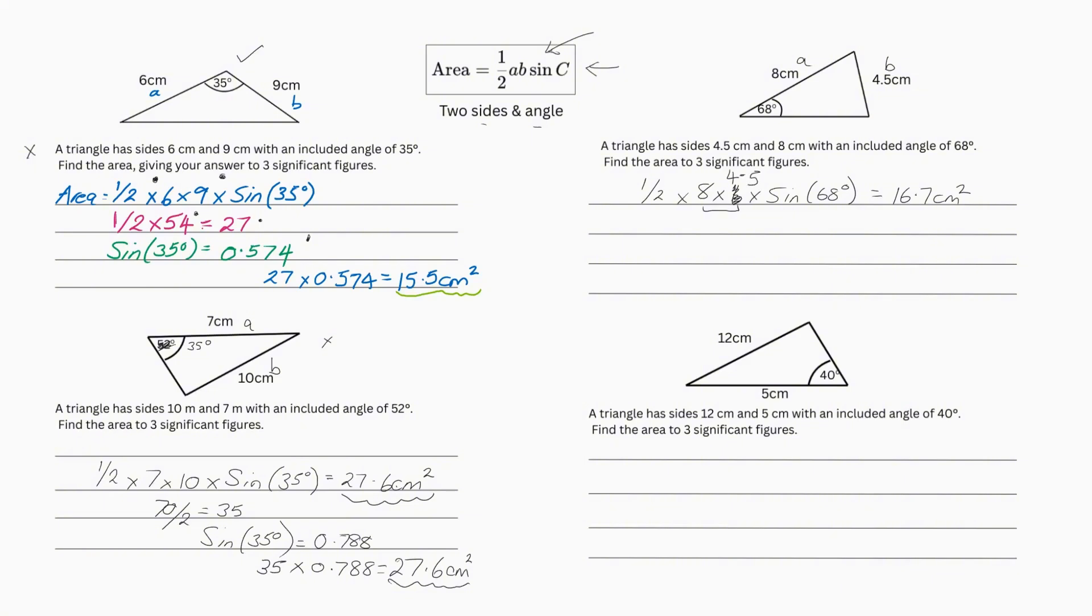Whoops. So 8 by 4.5. So that's going to be 36. Half 36 is 18. And then we have sin 68 degrees. Remember to close the bracket on your calculator. That equals 0.927. And then put it all together. 18 times 0.927 gives you 3 significant figures, 16 centimeters squared.